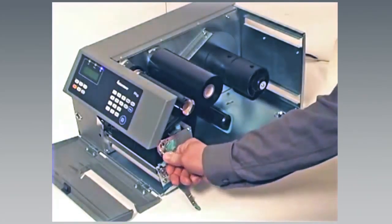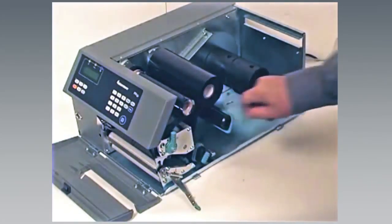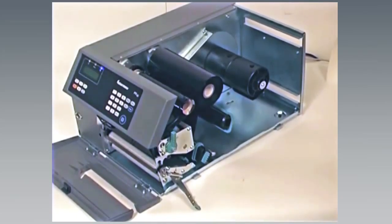Turn the printhead lift lever counter or anti-clockwise to raise the printhead. If this is the first time media has been loaded into the printer, there should not be a media core on the supply hub. If there is an empty media core on the hub, remove it.